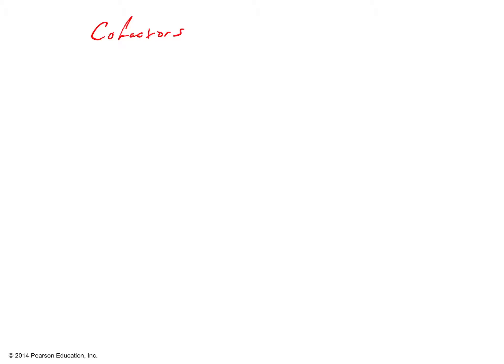Up to this point I've been talking about enzymes working on their own, but typically they don't. We have other molecules called cofactors that very often help enzymes do their jobs. These are non-protein enzyme helpers — they can be inorganic, like metal ions such as calcium 2+ or magnesium 2+, which attach to an enzyme and make it work more efficiently. Cofactors can also be organic; if they're organic, they're referred to as coenzymes. You might know these better by another term: vitamins. Vitamins are organic cofactors — coenzymes that help our enzymes work more efficiently and faster.